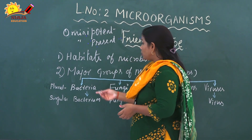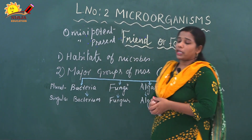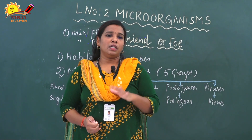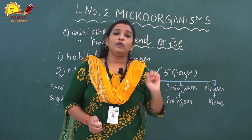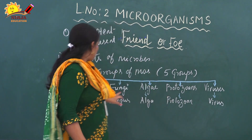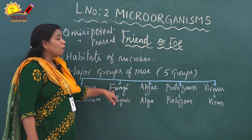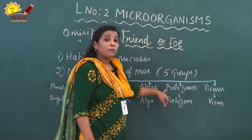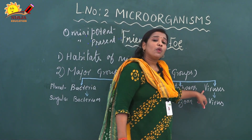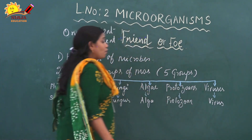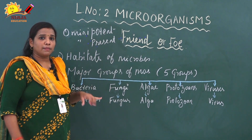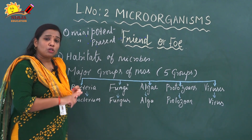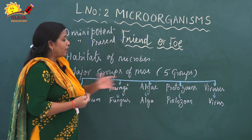Next, we are going to discuss the major groups of micro-organisms. Micro-organisms are classified into 5 major types: the first is bacteria, second is fungi, third is algae, fourth is protozoans, and fifth is viruses. These are the 5 different types of micro-organisms — bacteria, fungi, algae, protozoa, and viruses.